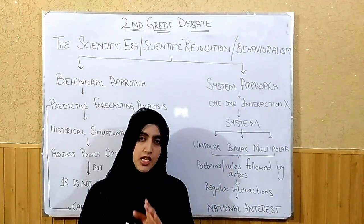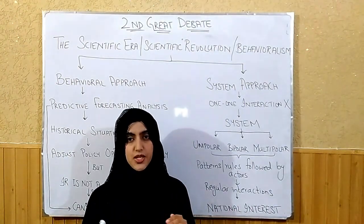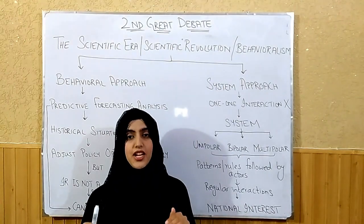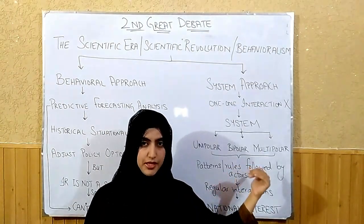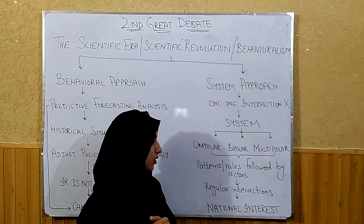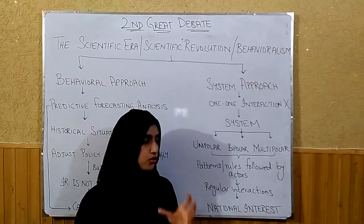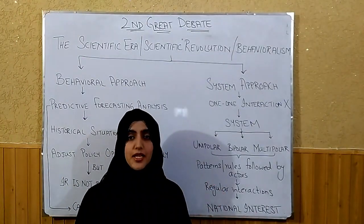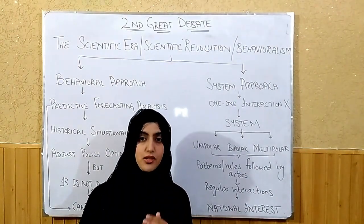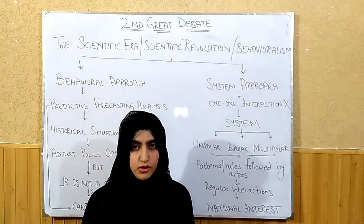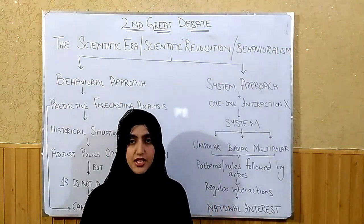Before the First World War, there were many great powers that existed in the international system, which is called multipolarity. Whatever system exists — unipolar, bipolar, or multipolar — there will always be some form of order. Many actors or states follow certain rules and patterns. They follow their own behaviors in order to attain their national interests.